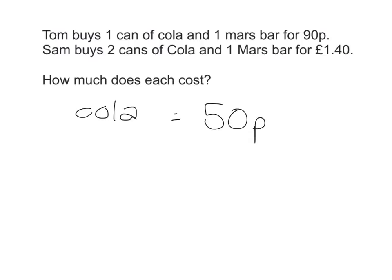You can see that from looking at the question. The only thing extra that Sam bought was one can of cola and that's an extra 50p, so each can must be 50p. You can then just go back to looking at what Tom buys. Tom buys one can of cola, which we know is 50p, and he also buys one Mars bar and his total is 90p. So if a cola is 50p, then the Mars bar must be 40p to make up that 90p.